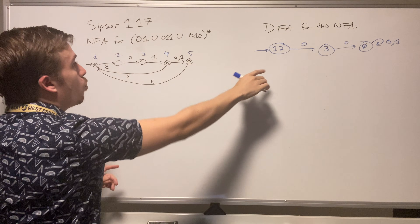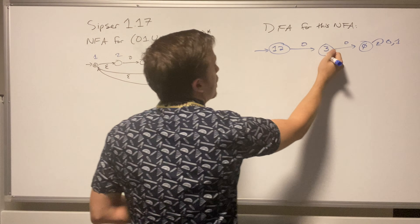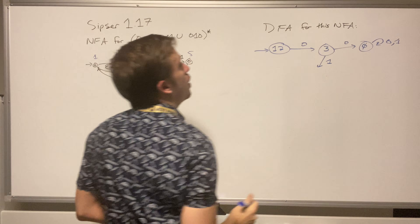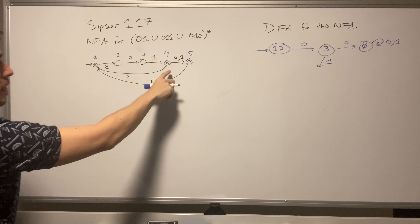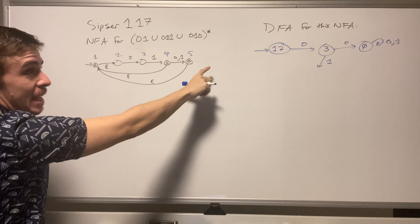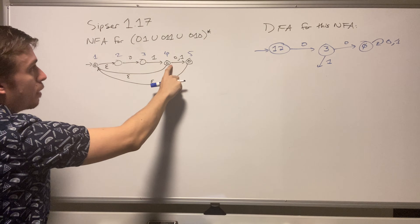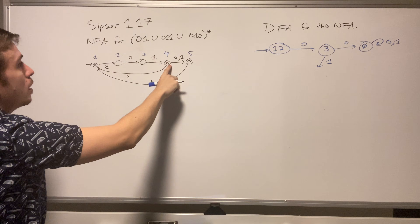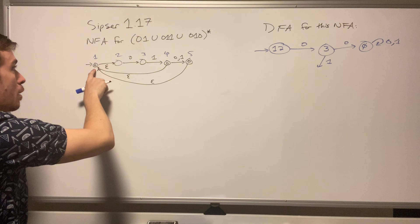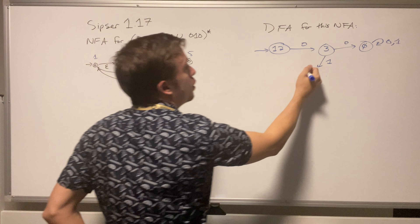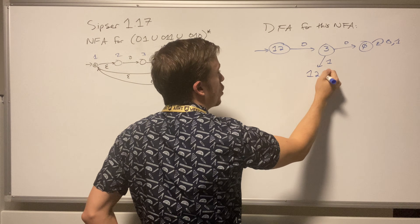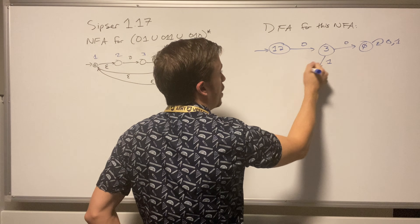If I read a one from the start state one-two, I can reach four. I can't get to five because that requires a character transition, but I can also go to one and two via epsilon. So the set of states I can reach on a one transition is one, two, and four.